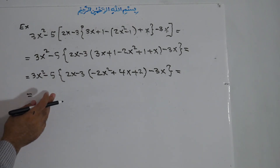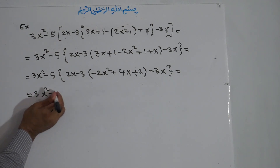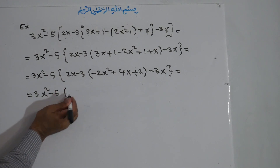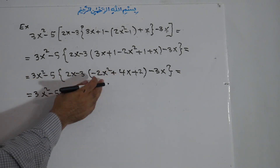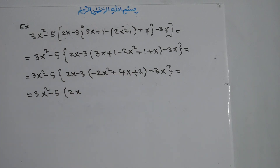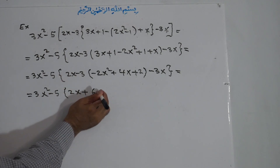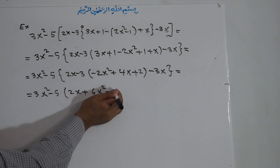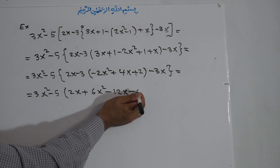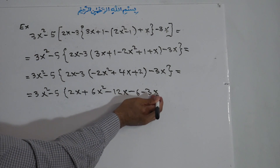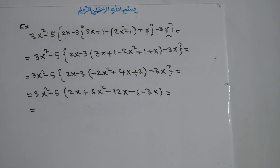We have now simplified the inside of the small bracket. It is time to remove it. We write 3x² minus 5. The medium bracket changes to small. The term negative 3 multiplies all terms of the polynomial inside: negative times negative is positive, 3 times 2 is 6, giving 6x²; negative times positive is negative, 3 times 4 is 12, giving minus 12x; and negative times positive gives minus 6. Then minus 3x in a small bracket.